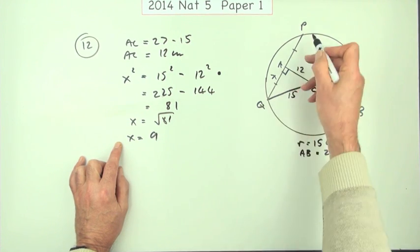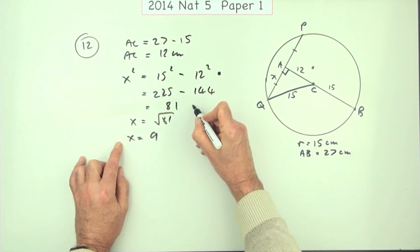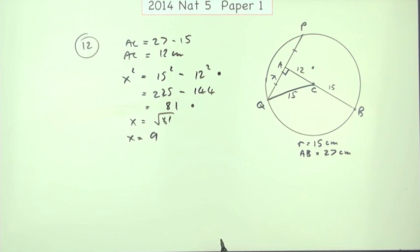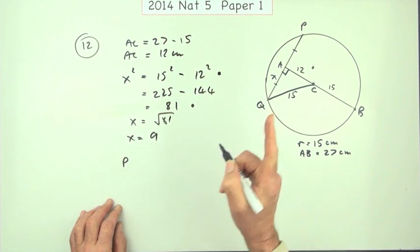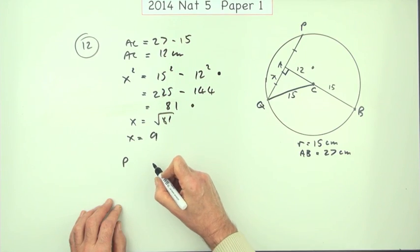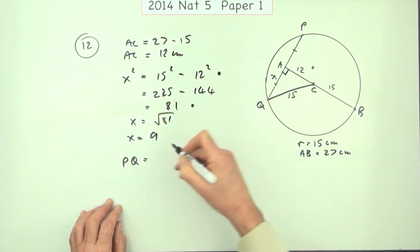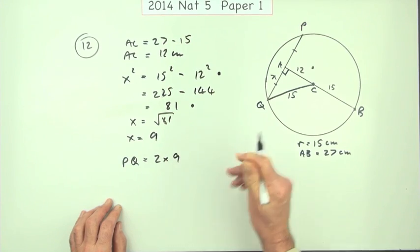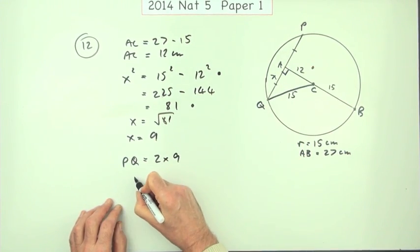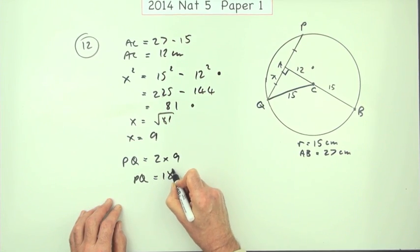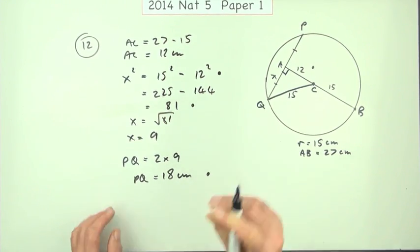Now you'd have thought that would have been the answer for the required bit for the third mark, because I've still got to get the full length. But partly just getting as far as this was the third mark. Then the final part, answering the question itself: what's PQ? Well, PQ was two times that because that was half the chord, so PQ is 18 centimeters. And that was the fourth mark.